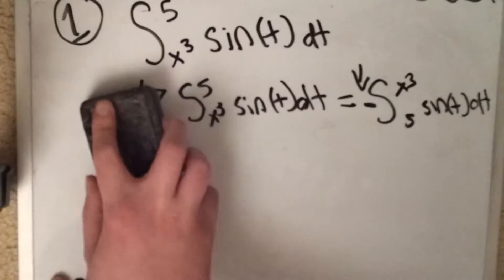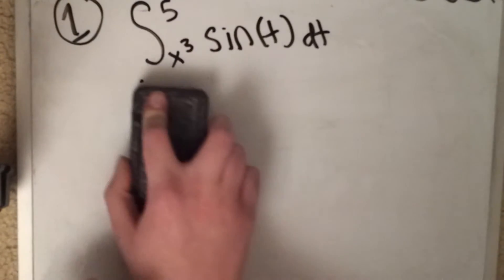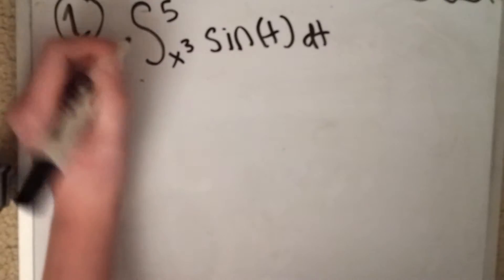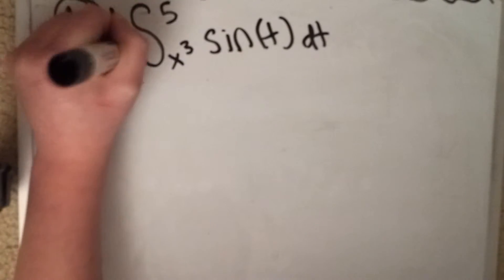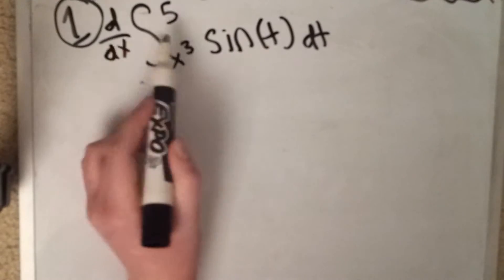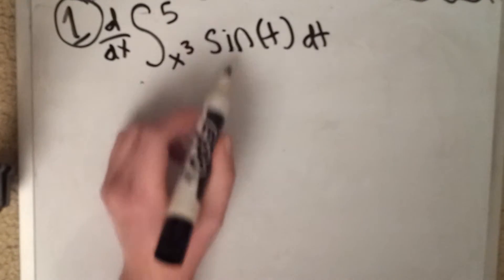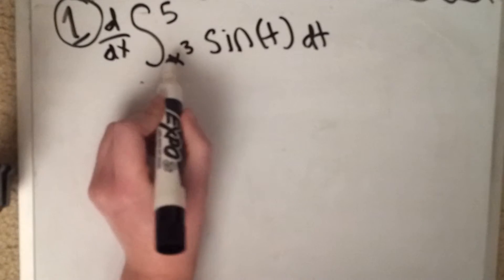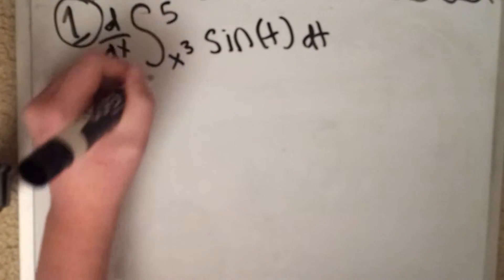So if we were to solve this, all you have to do, since we're taking the derivative here, so all you have to do to solve this is these two are going to cancel each other out basically. So you just take the original function, which is this, and plug in your x.